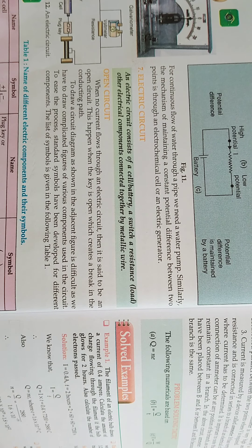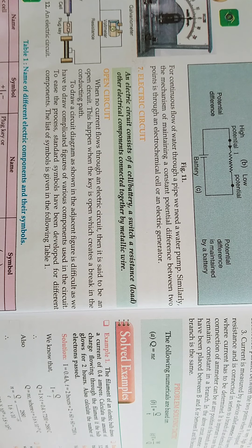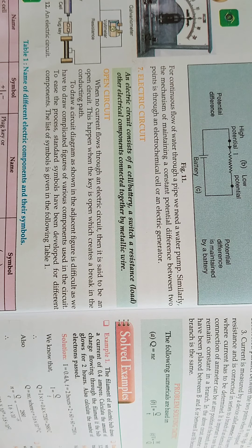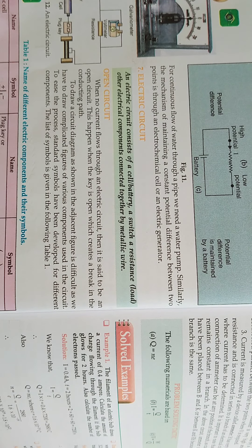The next topic is the electric circuit. An electric circuit consists of a cell or battery, a switch, a resistance, and other electrical components connected together by metallic wire. The electric circuit is complete when all components are connected.